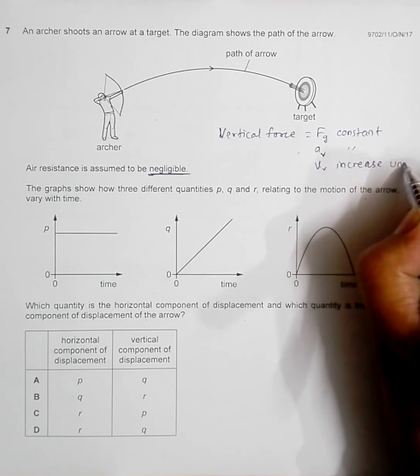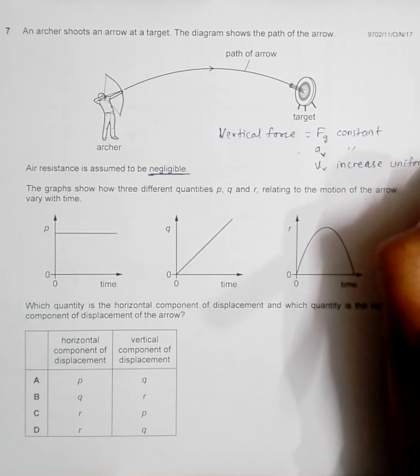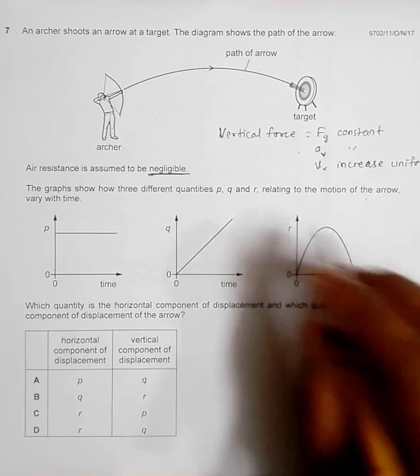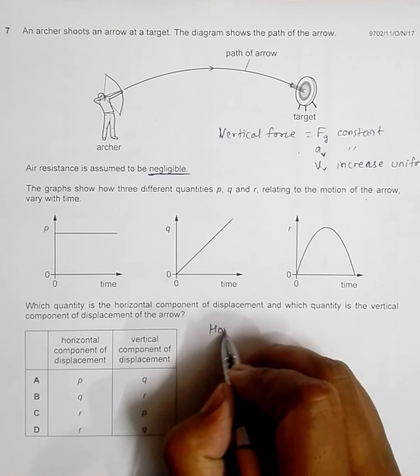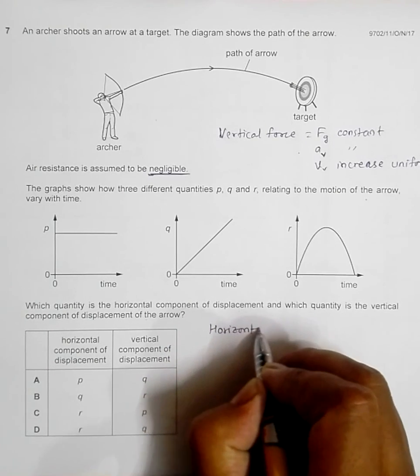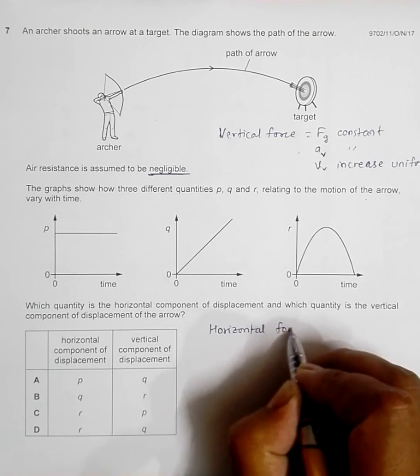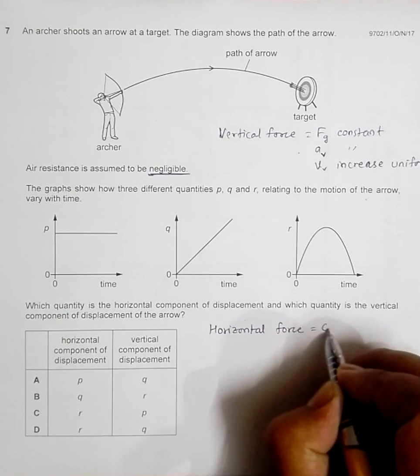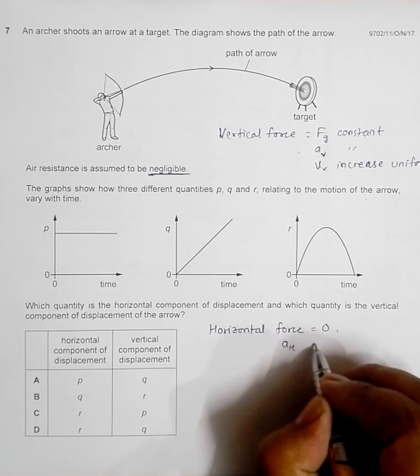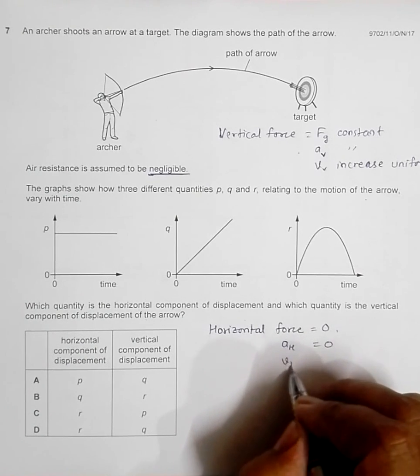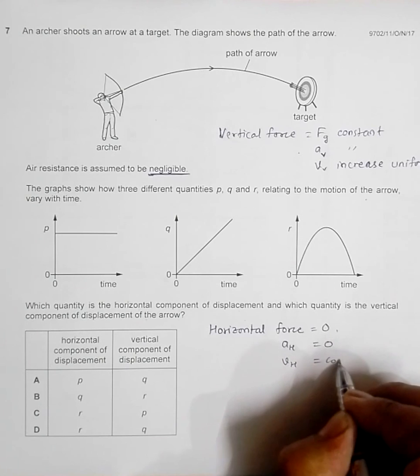For the horizontal force, horizontal force equals zero. This makes the horizontal acceleration equal to zero, and this makes the horizontal velocity equal to constant.